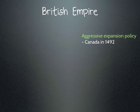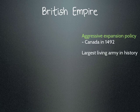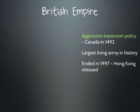Central to the United Kingdom is the concept of the British Empire. The British Empire essentially started in 1492 and was an aggressive expansion policy — we wanted more trade, we wanted to own other countries. Canada was the first country occupied in 1492, but there were other countries such as North East America, parts of South America, parts of Africa, Egypt, India, Oceania — so Australia and New Zealand — and also South Africa. At its greatest point it was the largest living army in history, and ultimately ended in 1997 when the Queen released Hong Kong, which became its own independent republic.